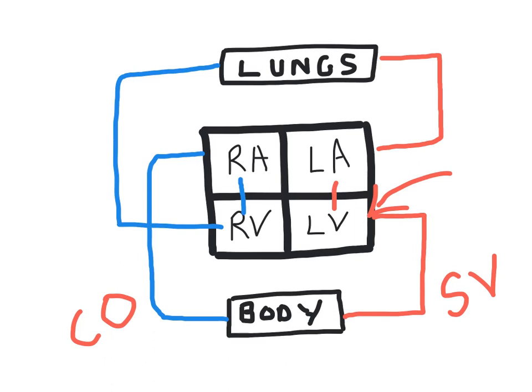My advice is to use an A4 piece of paper with three colours and draw the diagram as shown. Key terms to know: right atrium, left atrium, right ventricle, left ventricle, body, lungs, and valves. If you're pushing towards A-levels, it's good practice to know the four valves, but it's not required for GCSE spec. Also know oxygenated and deoxygenated blood, and remember — blood enters at the right atrium.